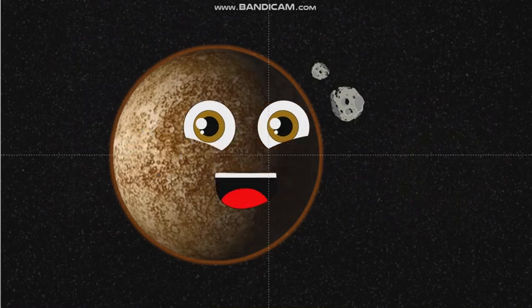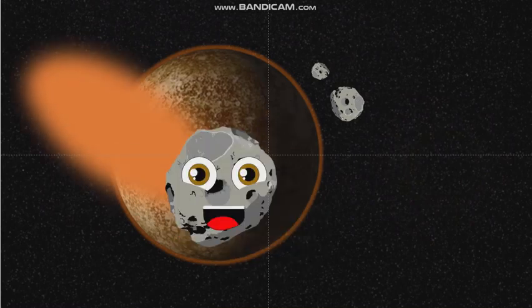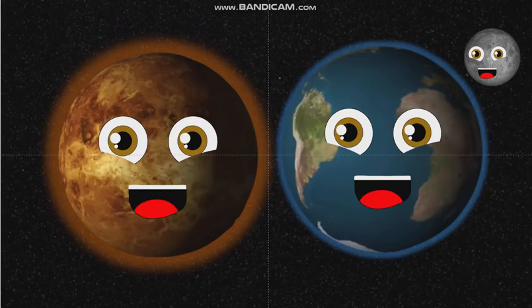I am Venus, my atmosphere's super hot. I spin backwards in a way the Earth's is not. I am closest to the Earth in distance and size. I have no moons, I hope you can sympathize.